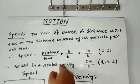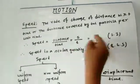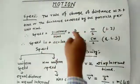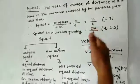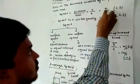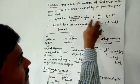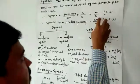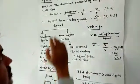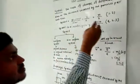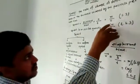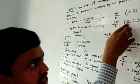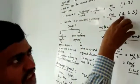In my previous lecture we discussed that distance is any kind of length, so the unit should be meter and time is second. Therefore, the SI unit of speed is meter per second. The second unit is the CGS unit. In CGS, C stands for centimeter, so you write centimeter per second.